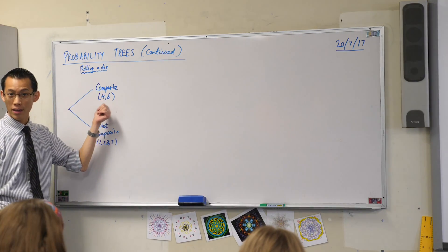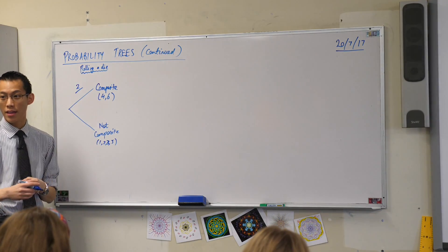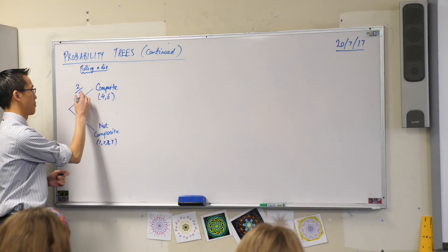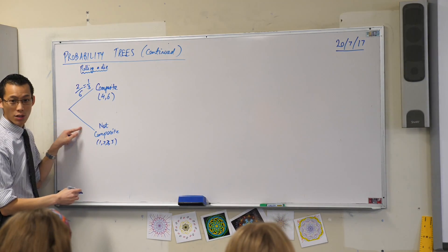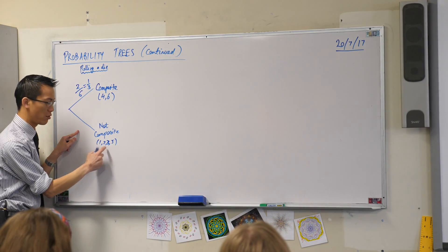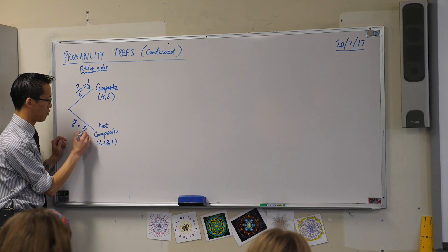How many favourable events are there here? Two. How many total events are there? Six. So I could easily write that as one over three. That would make this over here, you can count them up, one, two, three, four, out of six, which of course is two thirds.